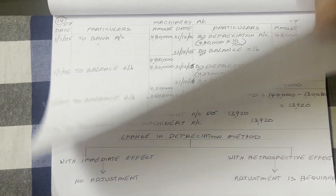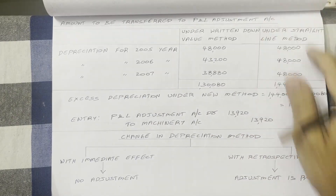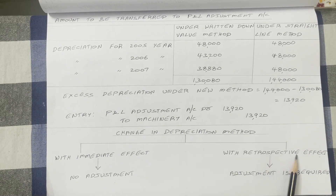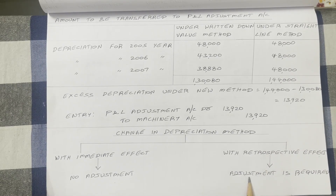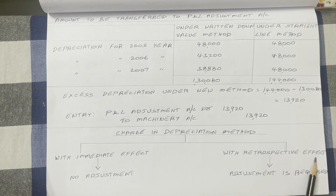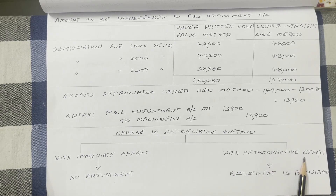This adjustment is done through the profit and loss adjustment account. So if the sentence 'with retrospective effect' is given, depreciation adjustment is required. Now in the present problem, this sentence 'with retrospective effect' is given, so let us see how to adjust the excess depreciation amount.